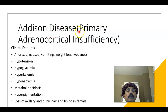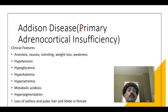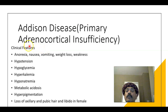Addison's disease is a disease of the adrenal cortex — it is not a problem of the adrenal medulla, the anterior pituitary, the posterior pituitary, or the hypothalamus. In adrenocortical insufficiency, what are the clinical features?